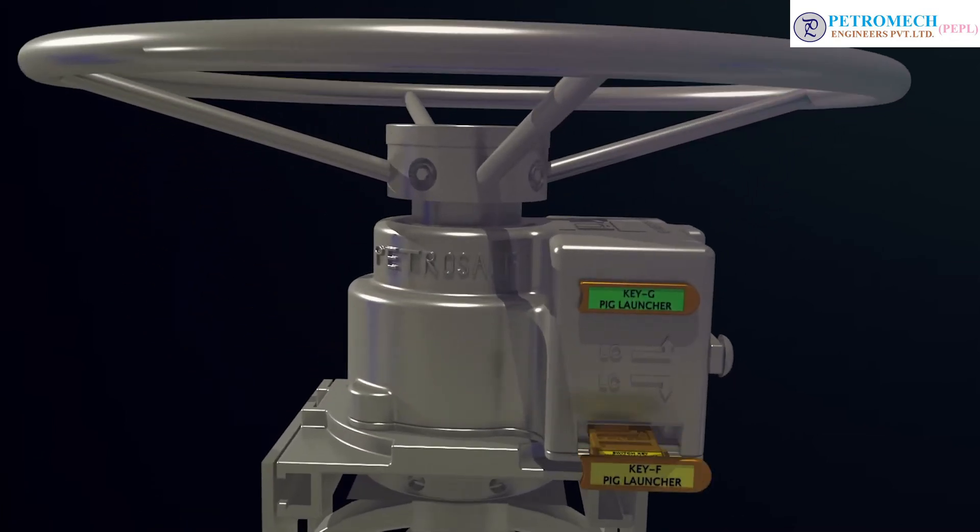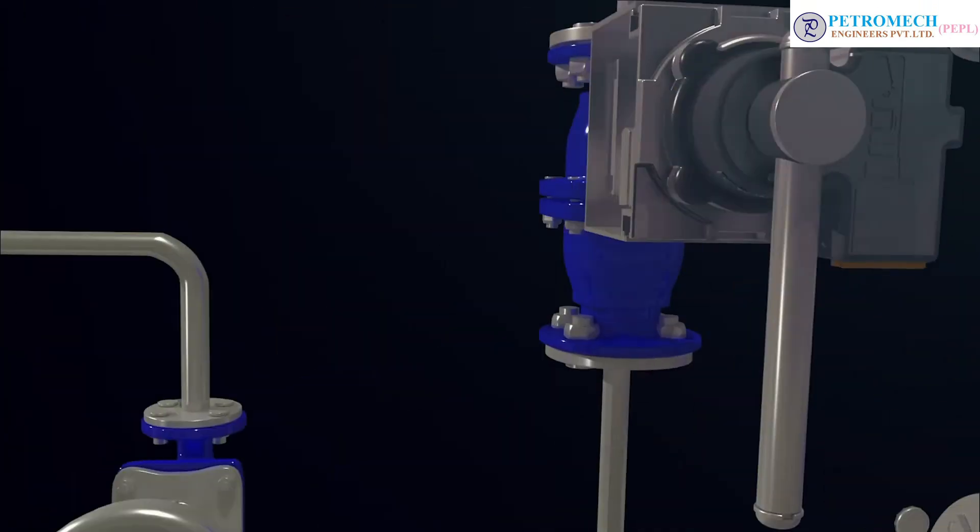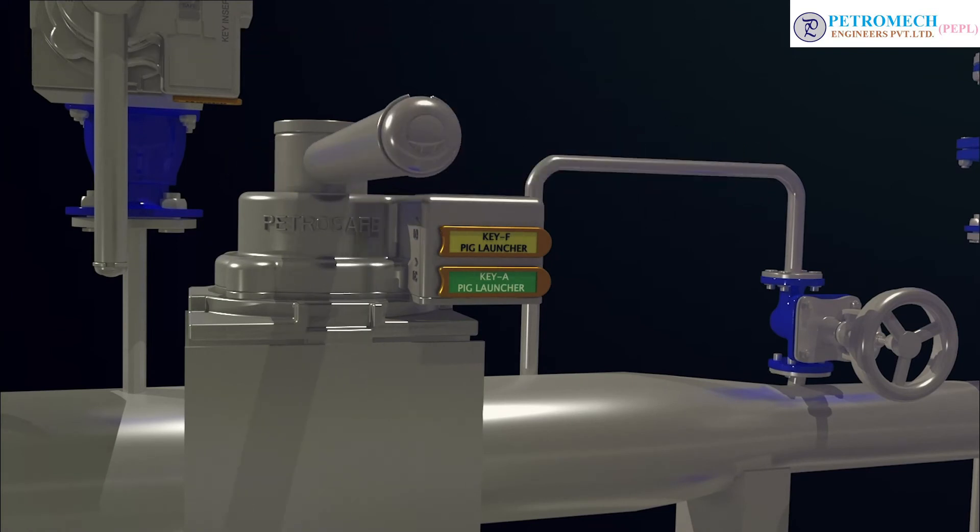Insert key F into kicker valve K1. Close the valve and release key A.